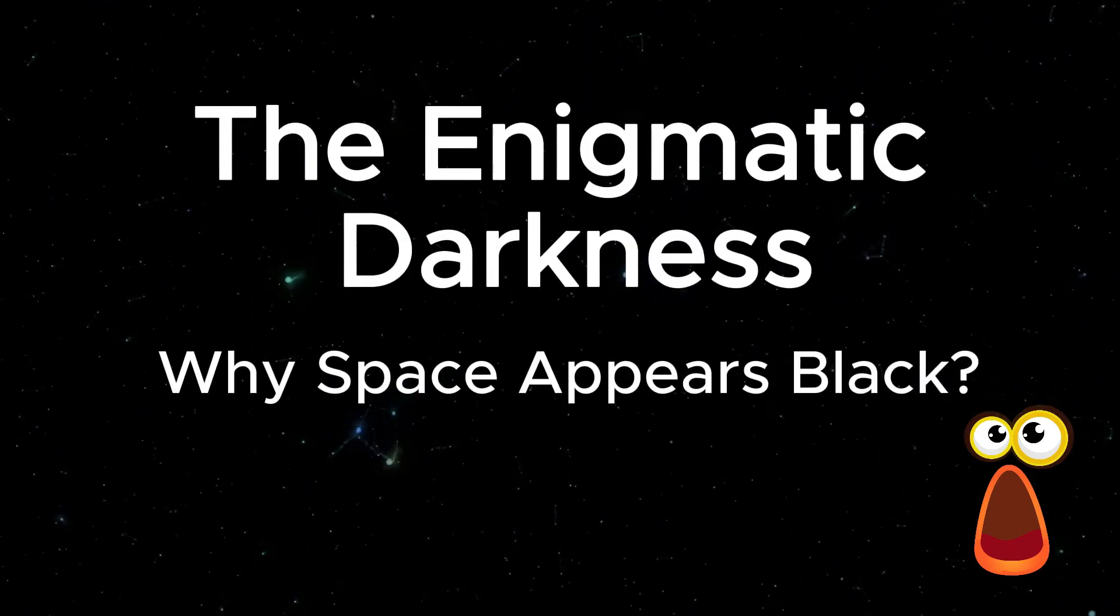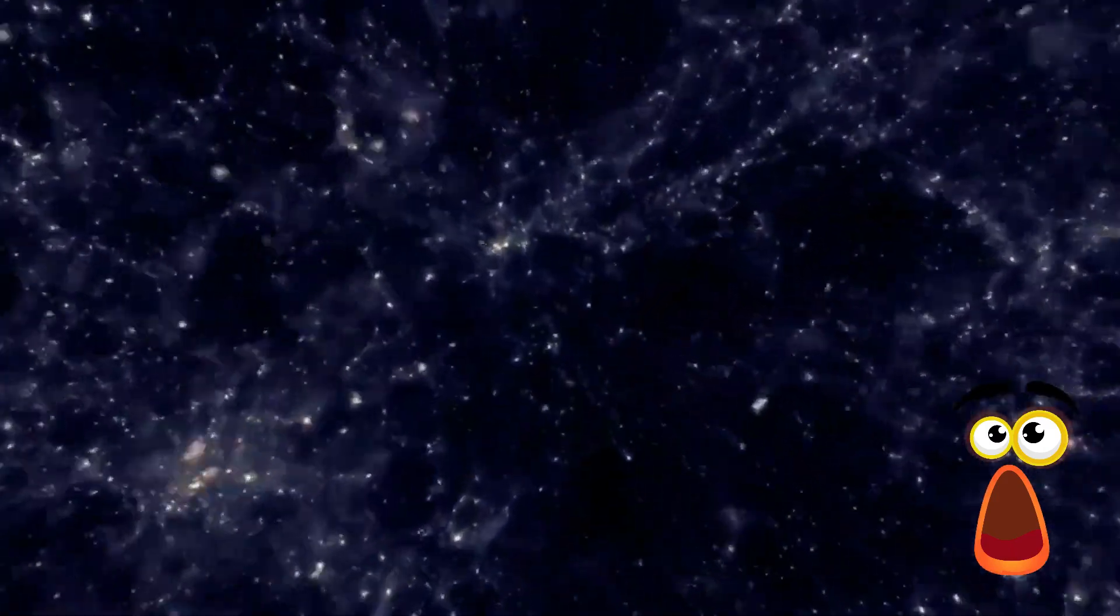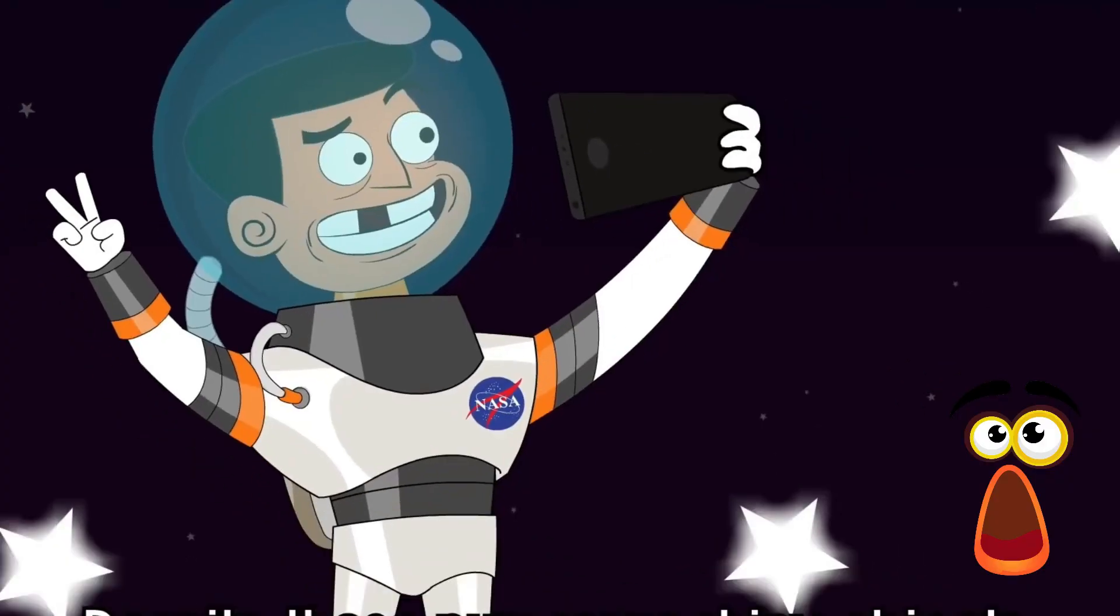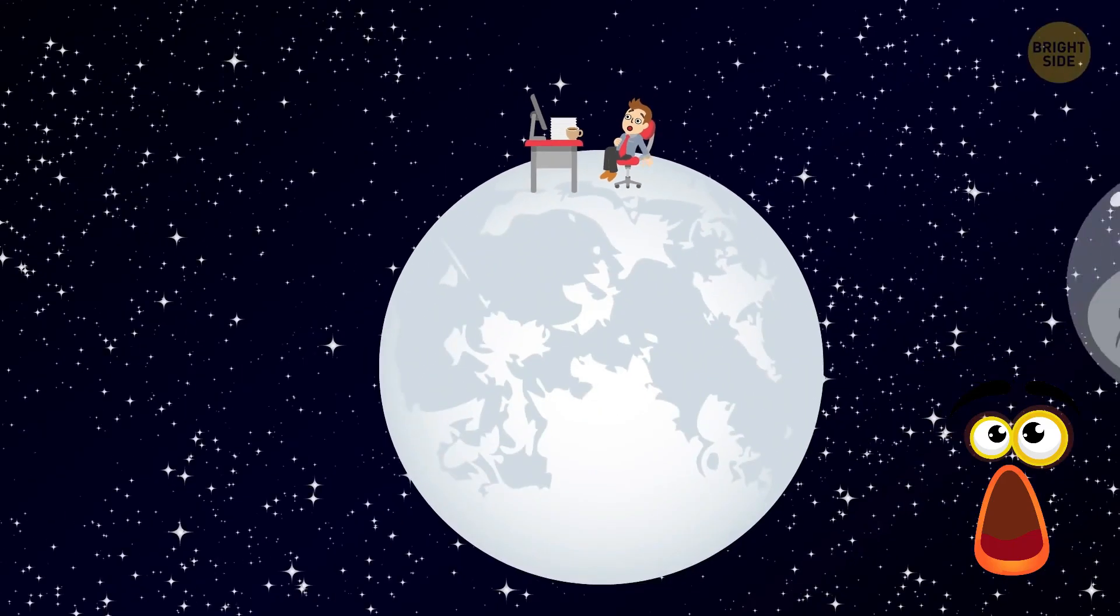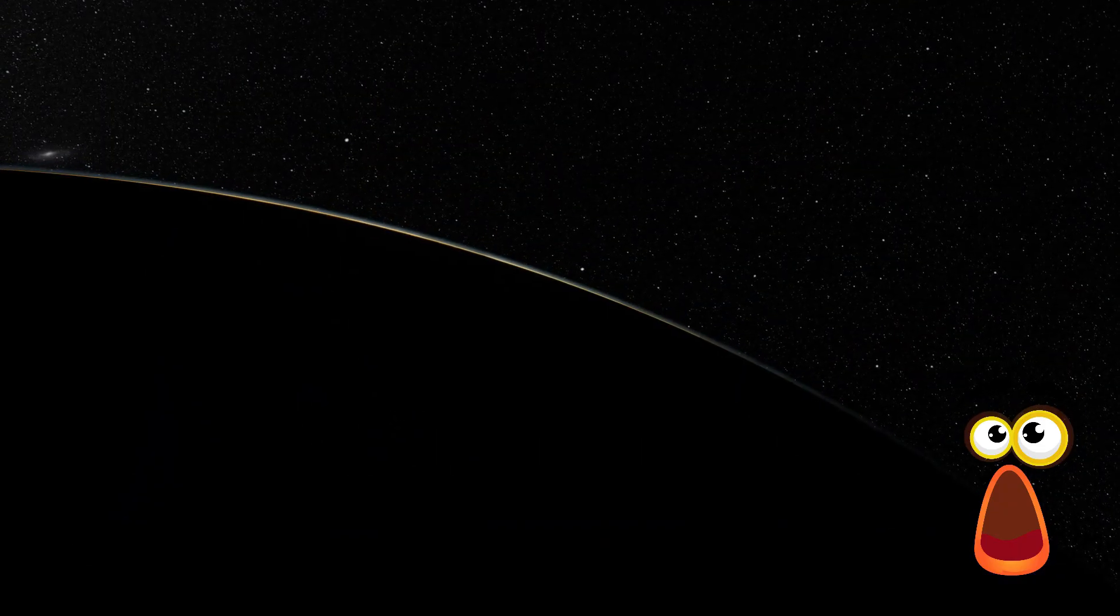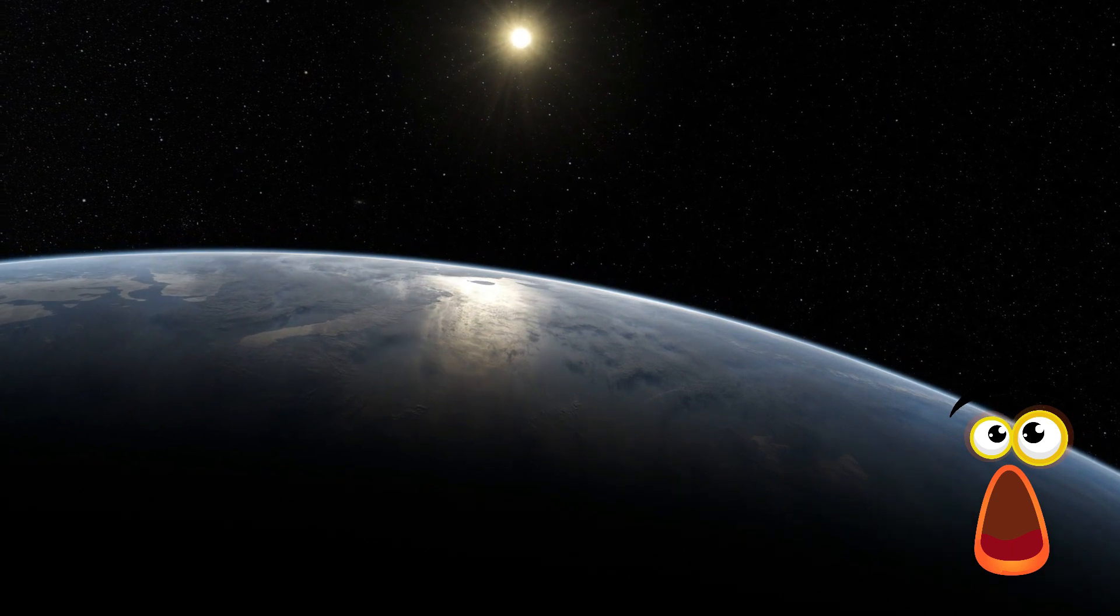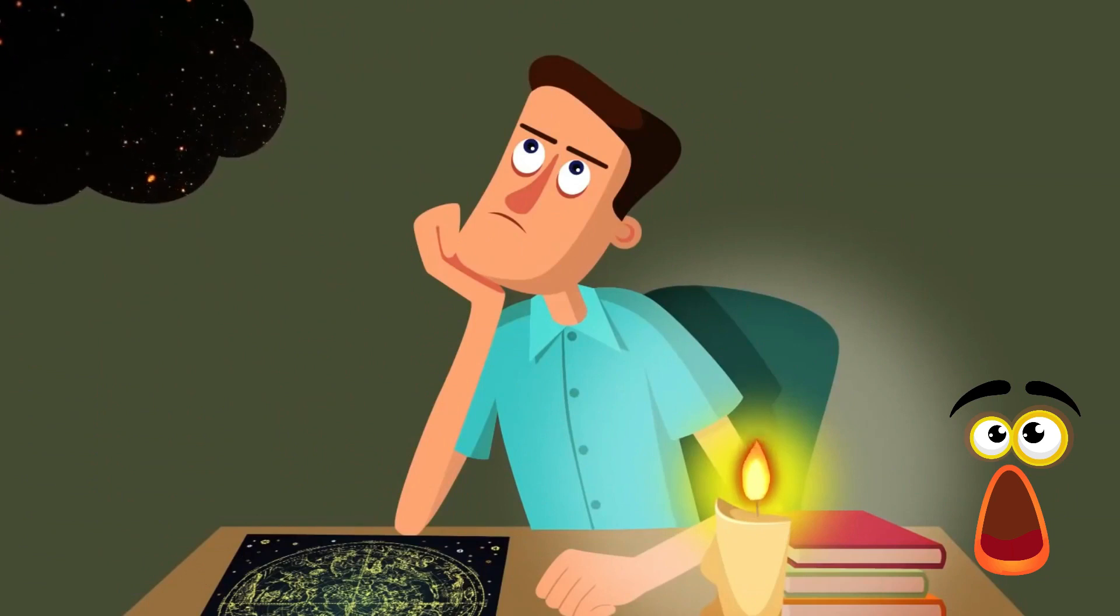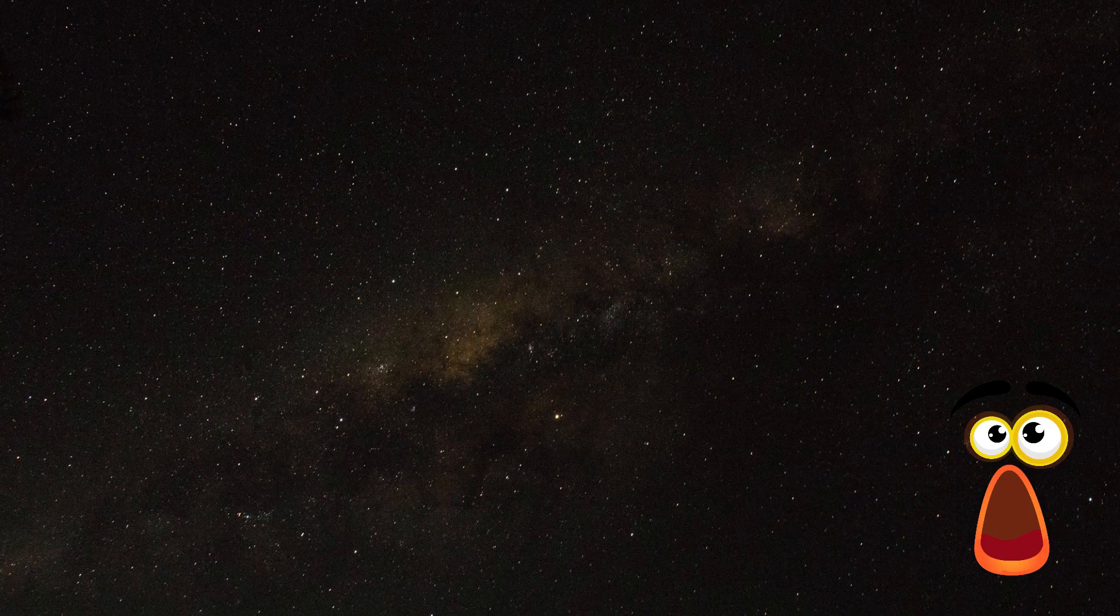Fact 4: The enigmatic darkness, why space appears black? The majority of space, the limitless abyss that extends beyond our knowledge, is made up of a vacuum, emptiness devoid of matter. The reason it appears black to us is largely due to its sheer size. We must examine the physics of light itself in order to comprehend why space appears to be black. Light is an energy-carrying electromagnetic wave that allows us to see and understand our surroundings.